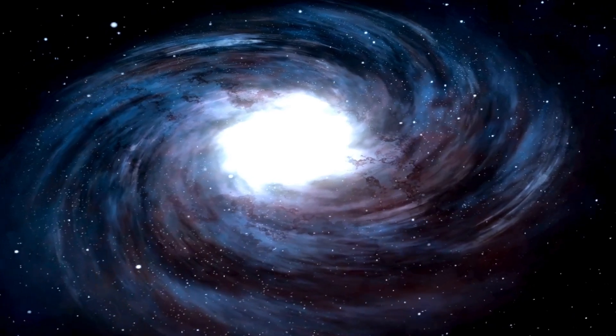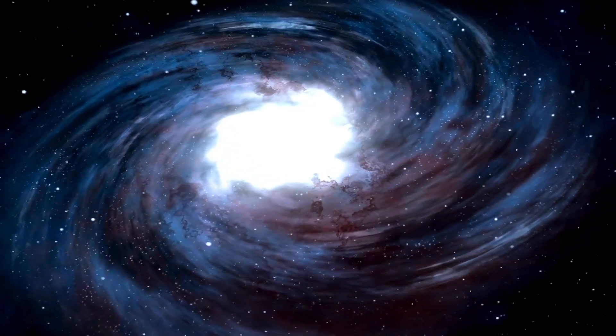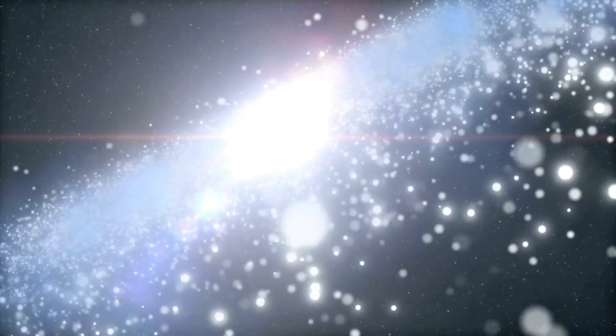However, the proximity of Proxima B to its parent star poses significant challenges for potential life on this exoplanet. Naturally, the planet is subjected to intense radiation from its star, potentially altering its chemical composition and impacting any potential biosphere.